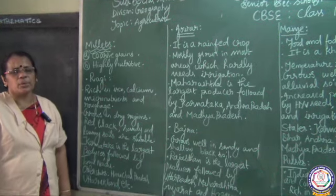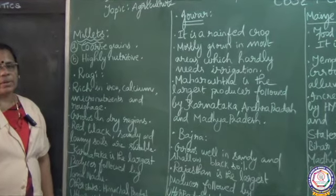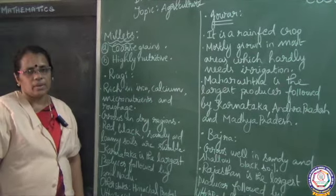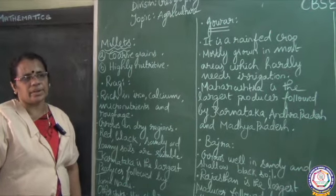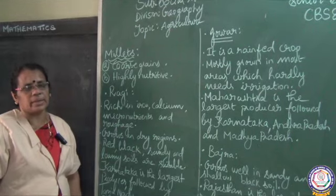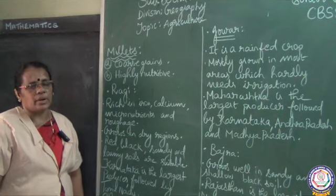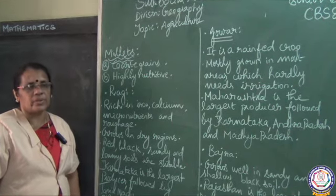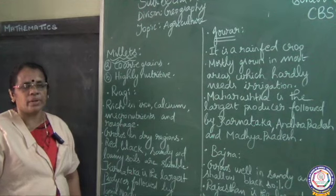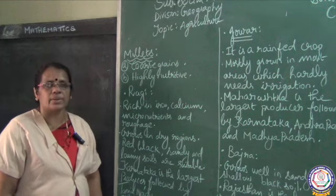Shri Guru Bhivyanama children, welcome to online class. Yesterday we completed a lesson on the major food crops grown in our country. We covered rice and wheat — the climatic conditions required, temperature, rainfall, areas of cultivation, and whether wheat is a Rabi or Kharif crop — everything in detail.